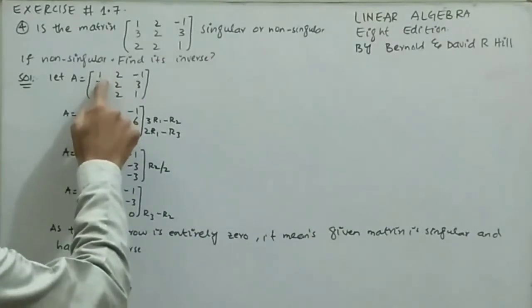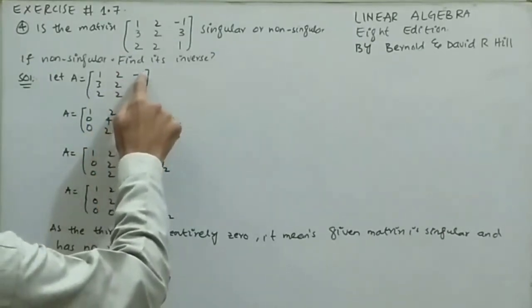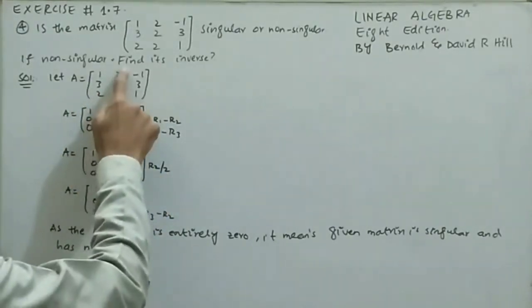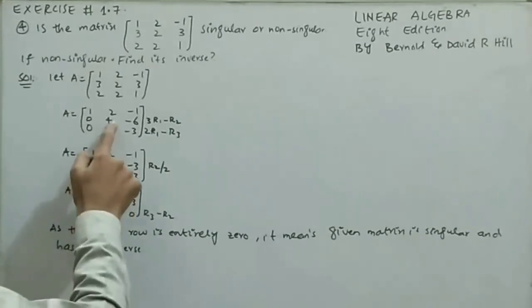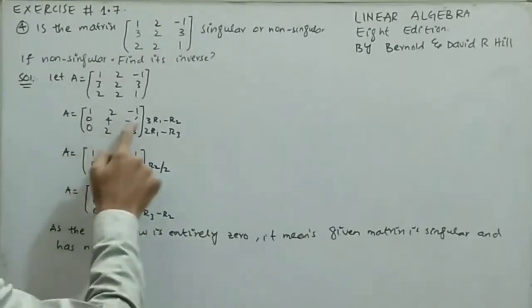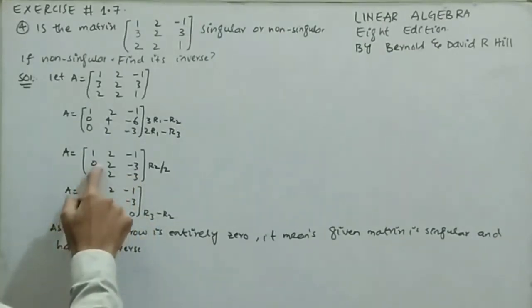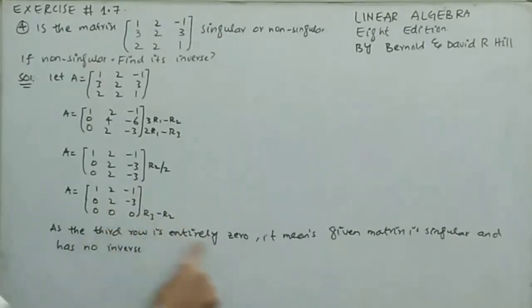Applying 3R1 - R2: 3×1 - 3 = 0, 3×2 - 2 = 4, 3×(-1) - 3 = -6. Applying 2R1 - R3: 2 - 2 = 0, 4 - 2 = 2, -2 - 1 = -3. Dividing row 2 by 2 gives [0, 2, -3]. Subtracting row 2 from row 3: 0, 2 - 2 = 0, -3 - (-3) = 0. The third row is entirely zero, so this matrix is singular and has no inverse.